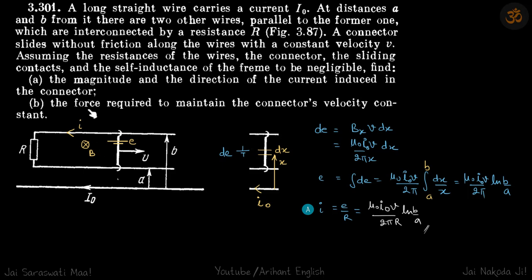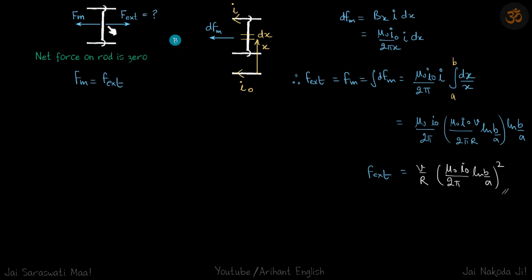Now second part: the force required to maintain the conductor's velocity. Let that be F external and this is the F due to magnetic induction. Net force on the rod is zero, that's why it's traveling with constant velocity. That means FM is equal to F external. So we can find FM by again taking a small part.